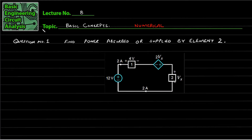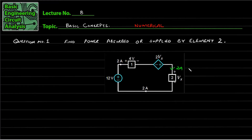The statement of the question is: find the power absorbed or supplied by element two. This is element number two, in which you have VX, the cross voltage, and the current flow is 2A. There is only one loop in the whole circuit, and the current flow is 2A. We will find the individual power supplied or utilized in each of the components.